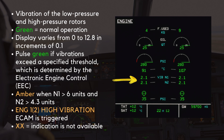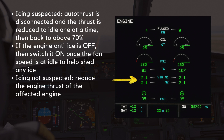The N1 and N2 vibration values indicate the vibration levels of the low pressure and high pressure rotors respectively. They are green when within their normal operating range. The display varies from 0 to 12.8 in increments of 0.1. The indications pulse green if the vibrations exceed a specified threshold, which is determined by the Electronic Engine Control, EEC. When the engine vibration reaches 6 units for N1 and 4.3 units for N2, the indications become amber and the engine high vibration ECAM is displayed. If the indication is not available, the corresponding indication is replaced by two amber crosses. If the vibration is suspected to be due to icing, the auto thrust is disconnected and the thrust is reduced to idle one at a time. If the flight conditions permit, then back to above 70%. If the engine anti-ice is off, it is recommended to switch it on once the fan speed is at idle to help shed any ice. If icing is not suspected, then the procedure is to simply reduce the engine thrust of the affected engine.